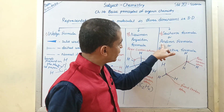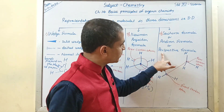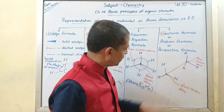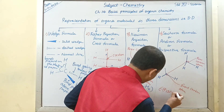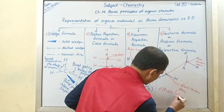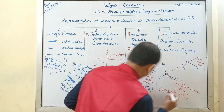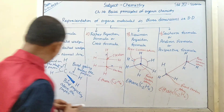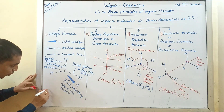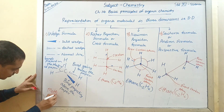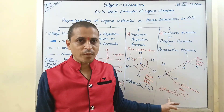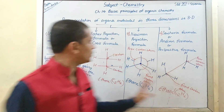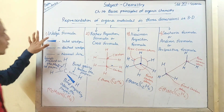It is also called anterior formula and perspective formula. This is the structure of the ethane molecule, shown by C2H6. I hope you understood all these four methods.